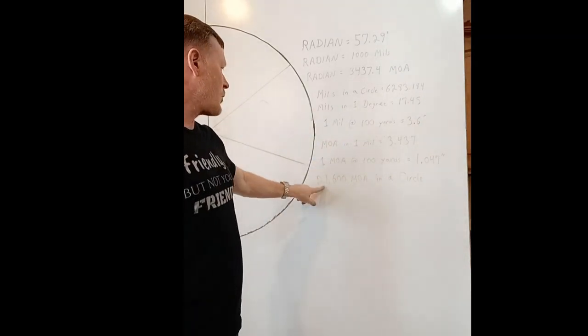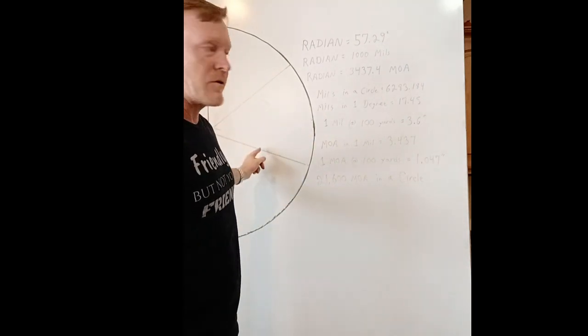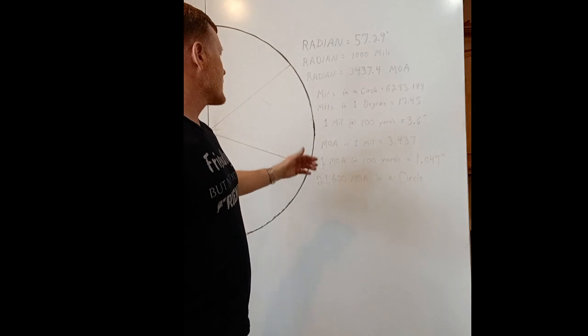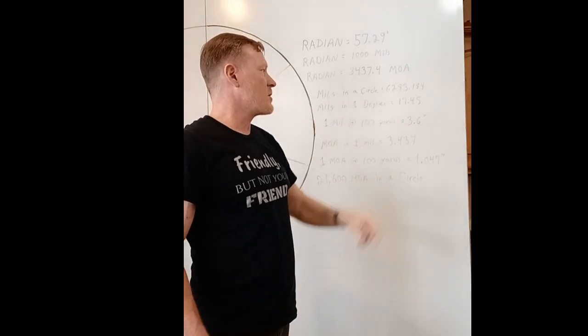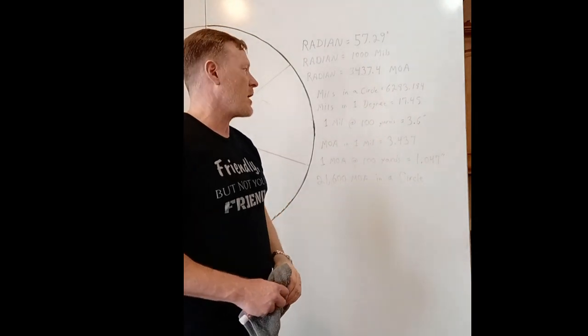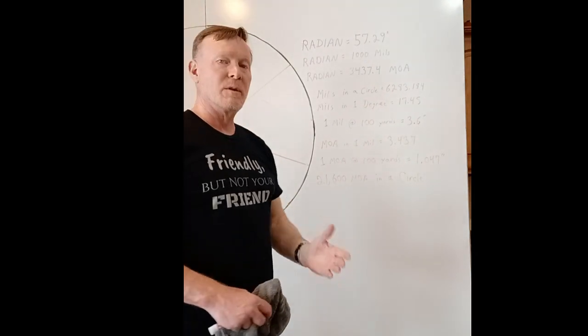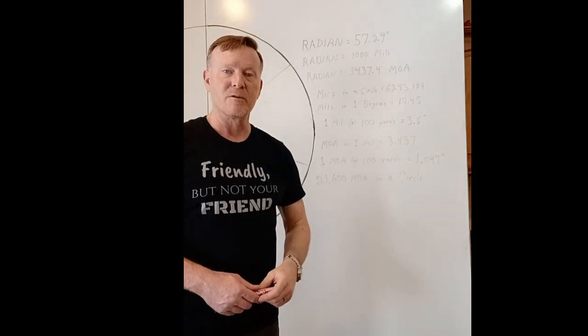I wrote some other facts. So there's 21,600 minutes of angle in a full circle. How many mils are in a circle? About 6,283.184, and I say about because we're dealing with pi. Those of you in the military, we were taught that there's 6,400.